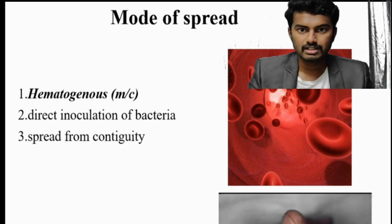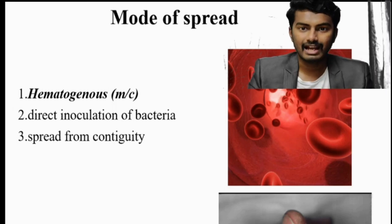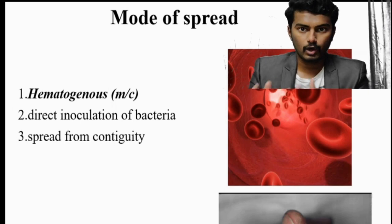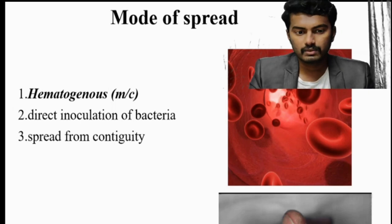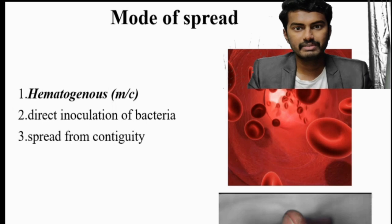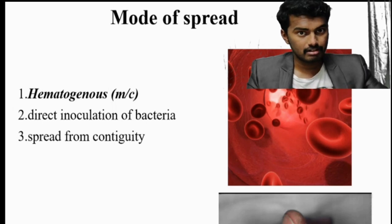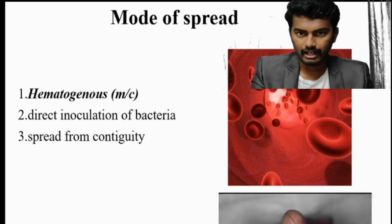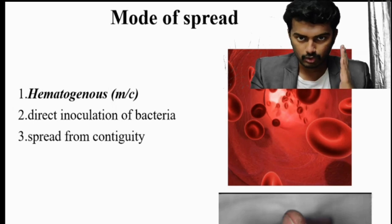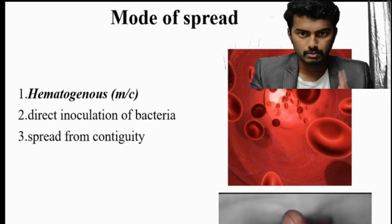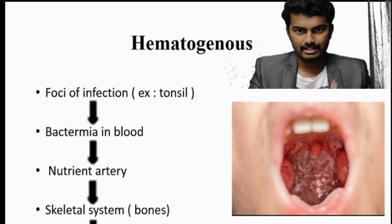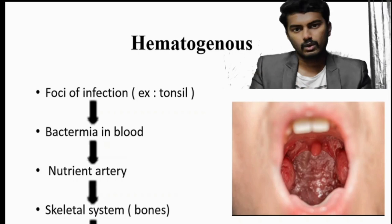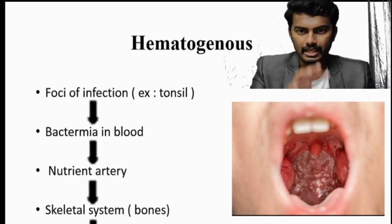Osteomyelitis spreads by three routes: hematogenous spread from infective foci, direct inoculation of bacteria from trauma, and spread from contiguous joints. The most common mode of spread is hematogenous. Consider a foci such as in the appendix or tonsil — bacteria circulates in the blood and seeks a site to lodge.